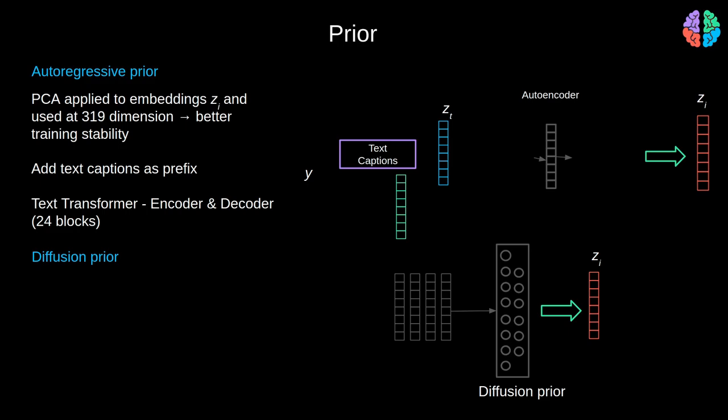Applying such a technique seems to increase the training stability. Additionally, whenever they want to include the optional text caption, they use it as a prefix to the sequence. In terms of the model, they use a text transformer with 24 blocks as the encoder and a 24 block transformer for the decoder.